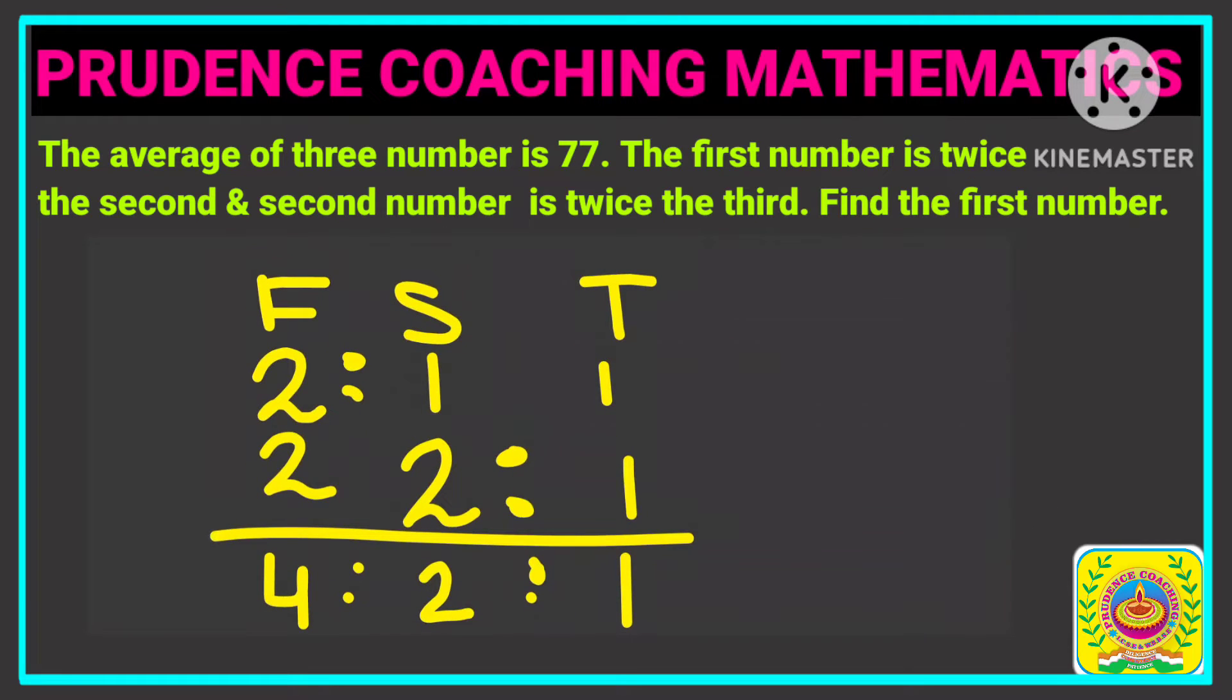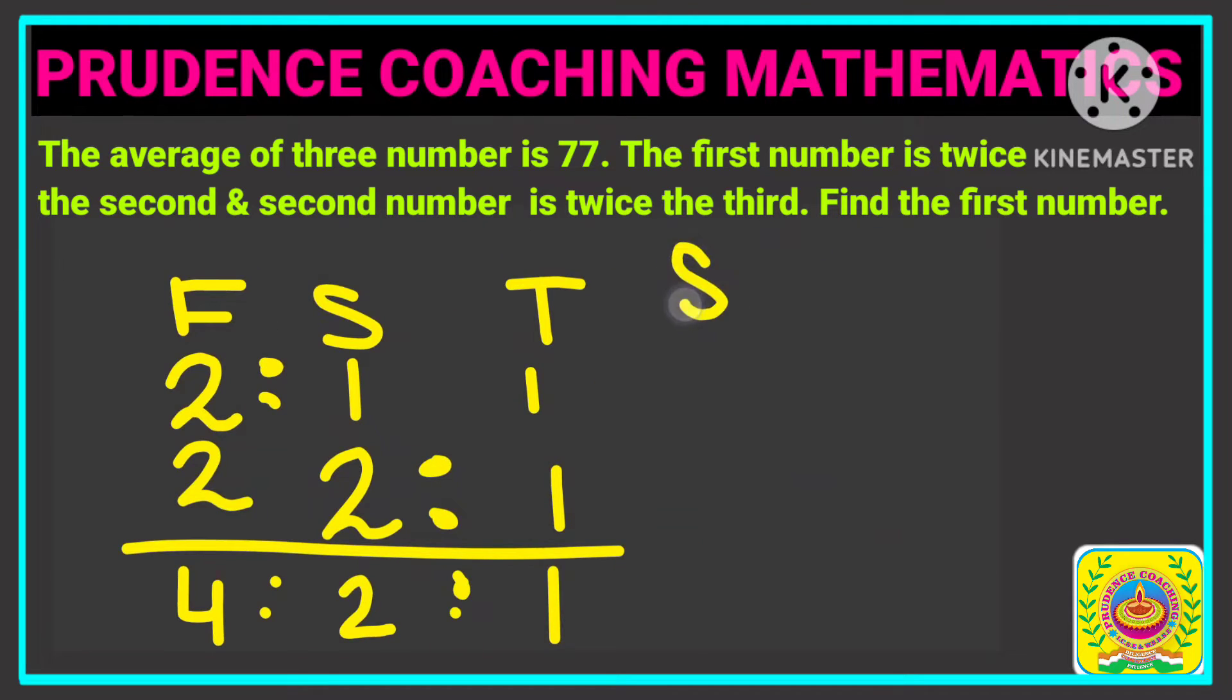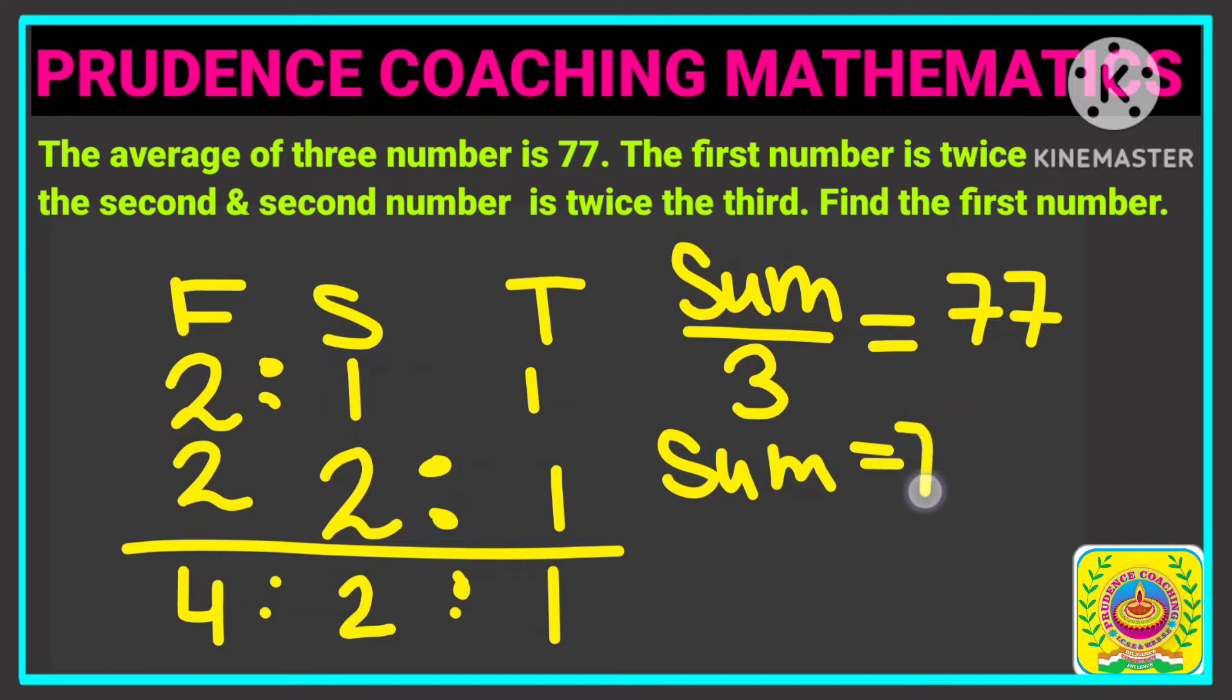Now it is said that the average of these 3 numbers is 77. You need to find the first number. So average means sum divided by how many numbers are there? 3 numbers are there. So this is equal to 77. From here we can find out the sum. So sum will be 77 multiplied by 3.